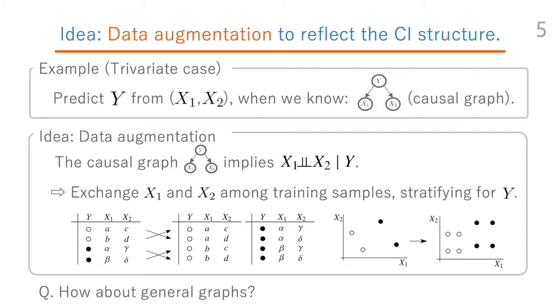That is, we can group the data based on the value of y, and in each group, we take all combinations of x1 and x2. This procedure reflects the knowledge that x1 and x2 are independent given y. In this example, the causal graph is simple and involves only three variables. The question is how to derive such data augmentation procedures for more general ADMGs.